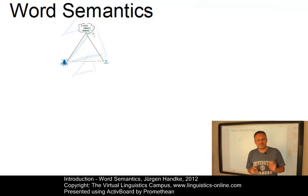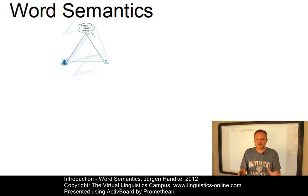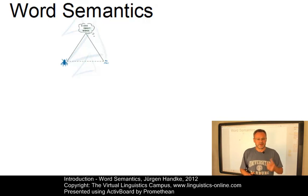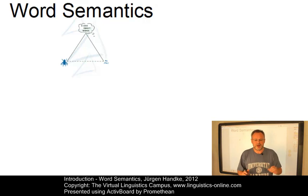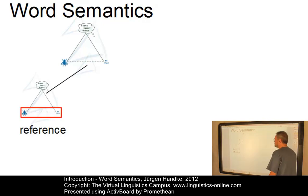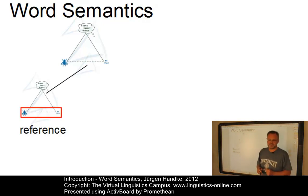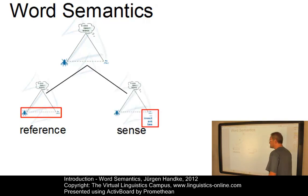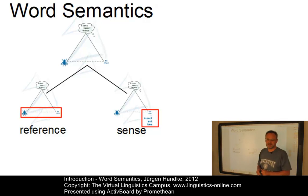Word semantics seeks to explain the phenomenon of meaning in natural language by defining the nature of word meaning. There are two ways of looking at word meaning, resulting in two branches. The first is referred to as reference or referential semantics. The second deals with sense and is often referred to as lexical semantics.